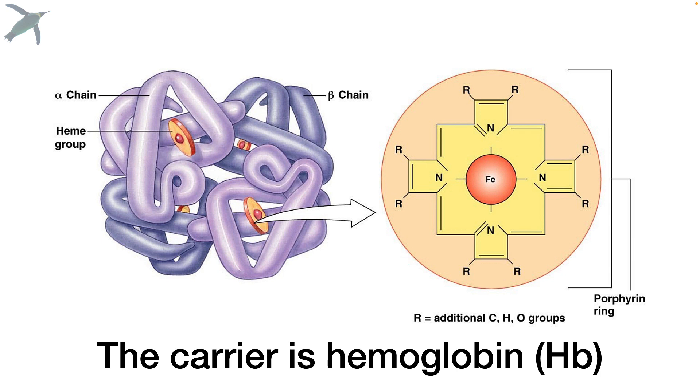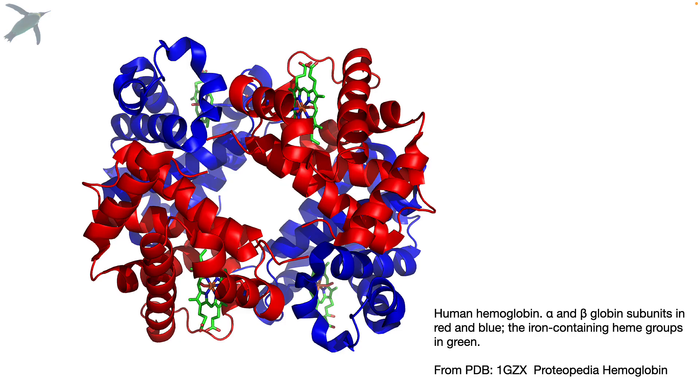So hemoglobin is a protein that's made of four subunits, two alpha chains and two beta chains. And in the center of each, there is a heme group with iron at the center. This is what it really looks like. And those heme groups here are shown in green.